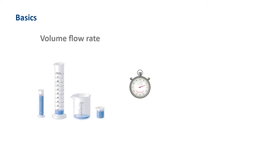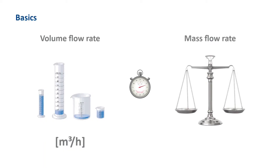In flow measurement, a distinction is made between volumetric flow — the volume per unit of time that flows through a pipe — and mass flow, the mass per unit of time that flows through a pipe.